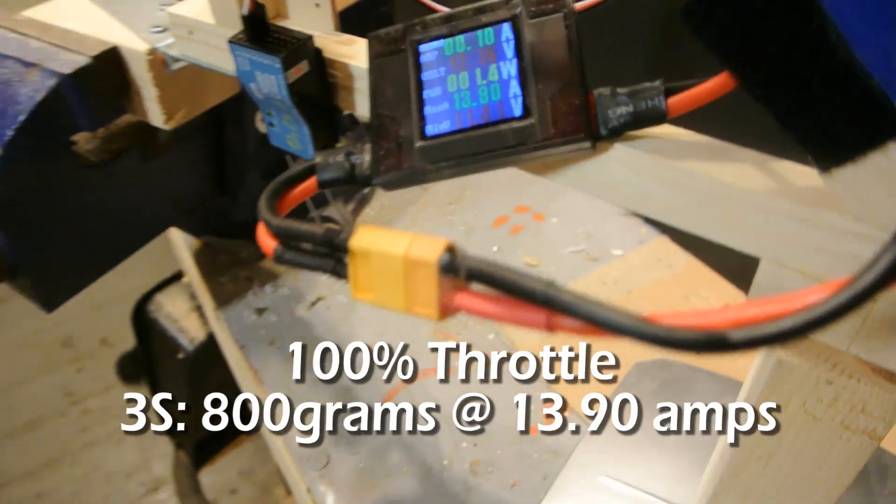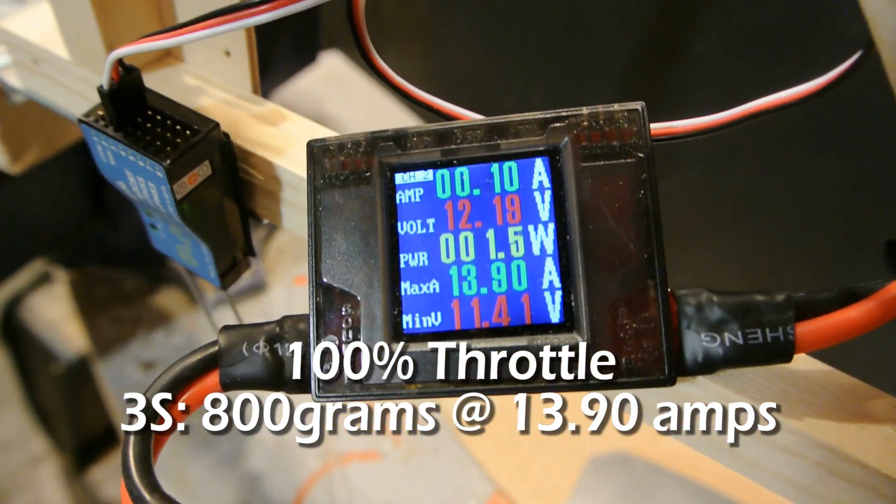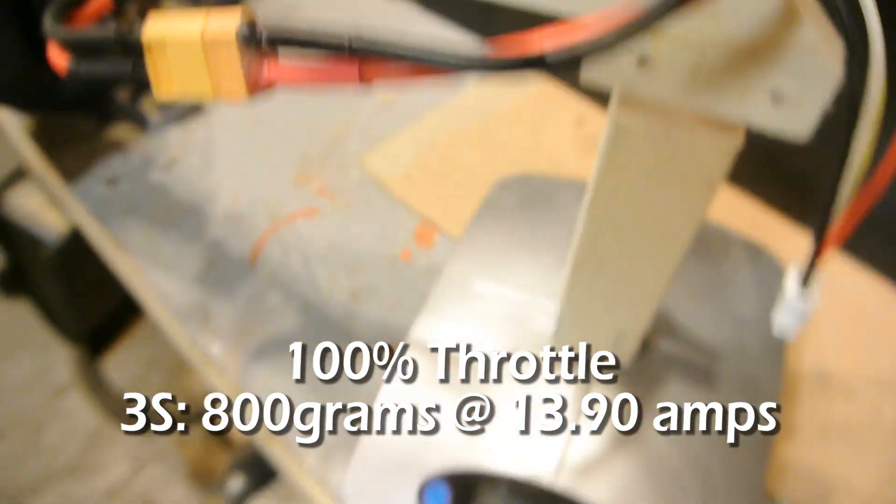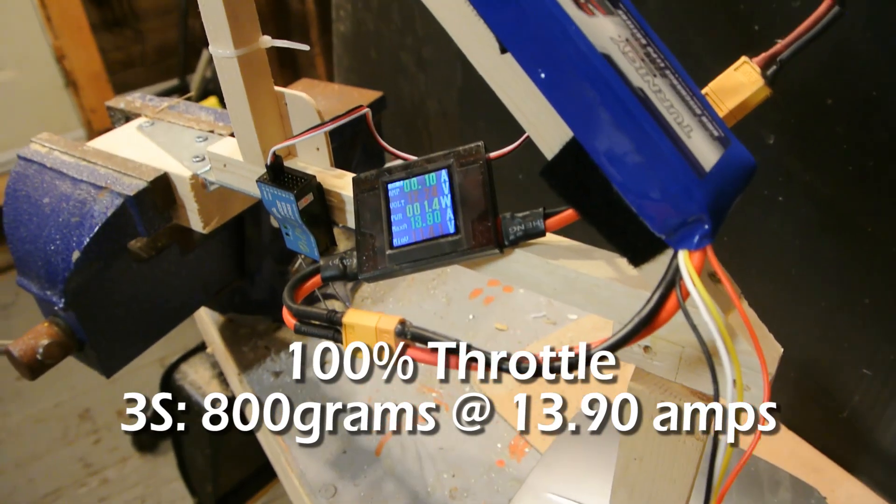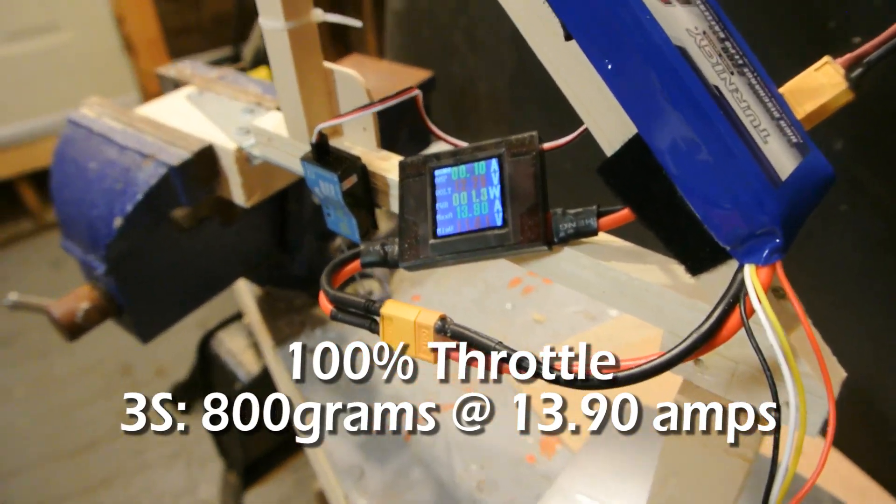So at full throttle we were pulling 13.9 amps and the thrust was—I don't remember what the thrust was actually, but I think it was like 800, maybe a little bit more than that.